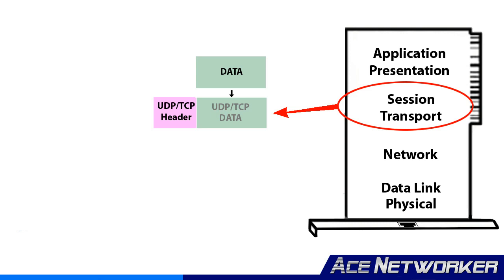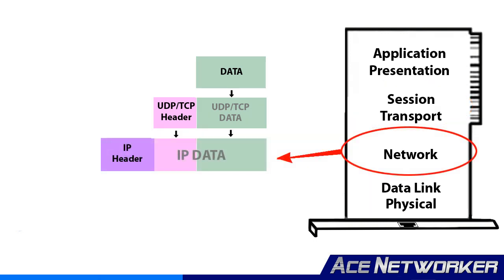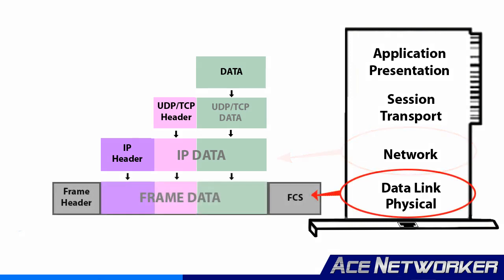Those packet headers are usually either TCP or UDP, which we'll get into in a later lesson. That packet — with the header, the actual data, and the CRC trailer — is then packaged into a Layer 2 frame for sending to the next physical device on the network: a switch, a router, a hub (hopefully not, we don't want to be using hubs anymore), a printer, a server, whatever that next device is.